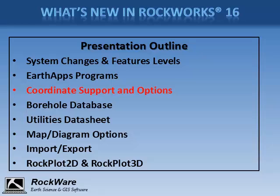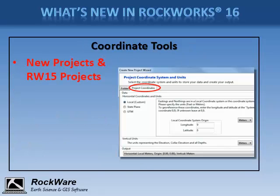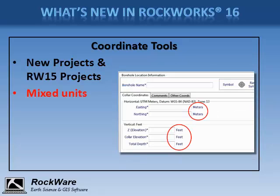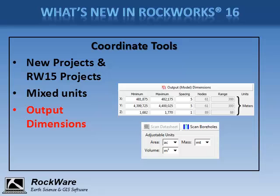New to RockWorks 16 is the ability to define your coordinate system and units in your projects, databases, data sheets, models, and graphics. This makes it easy to share your data and output with GIS systems and to display it within Google Earth. If you don't want to georeference your data, you can simply select a local coordinate system. Database map and depth/elevation units can be mixed — for example, XY in meters and depths in feet. You'll also define units for output dimensions, area, volume, and mass.